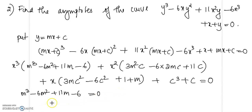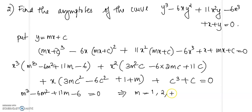Now, m cubed minus 6m squared plus 11m minus 6 equal to 0. We can see that m equal to 1 is a root. Solving this equation, upon dividing by m minus 1, the roots are m equal to 1, 2, and 3. Now let us substitute these values of m into the coefficient of the second highest degree term to find c.